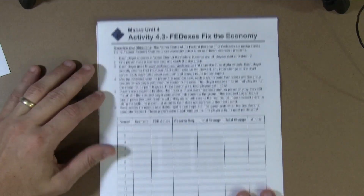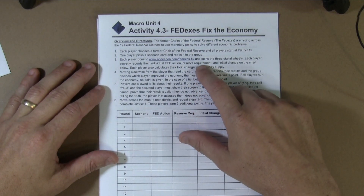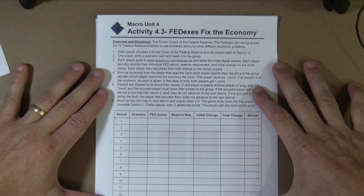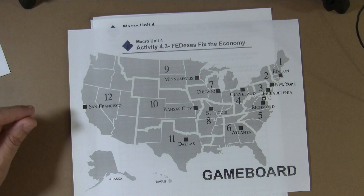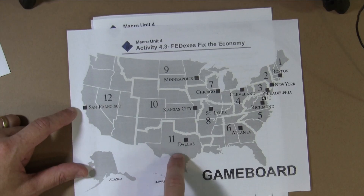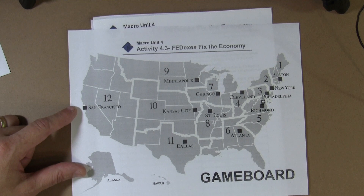Take a look at the teacher resources — I promise you they're worth it. But anyway, download the PDF. You're gonna get several different pages with instructions for students. The first page is basically the worksheet students will work on. Students are the former Fed chairs, the Fed Xs, and their job is to fix the economy while racing across the country — a map of the Federal Reserve System. They start in San Francisco in District 12 and move all the way to Boston in District 1.